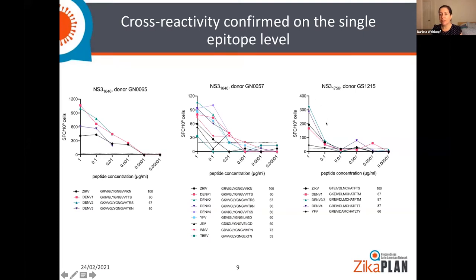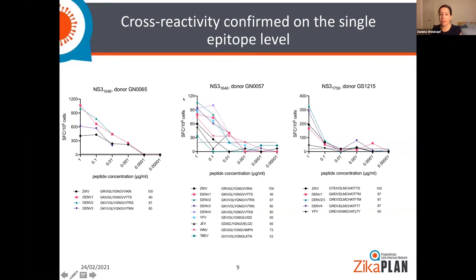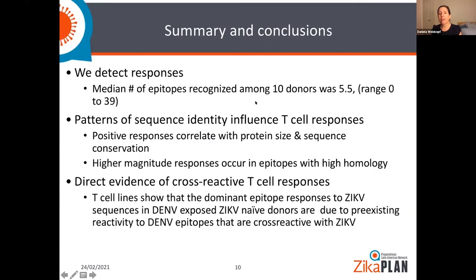We see not only cross-reactivity confirmed at the single epitope level between dengue and Zika virus, but in some cases also across dengue serotypes. That is something interesting to keep in mind — you cannot look at one infection of a virus as a single entity.